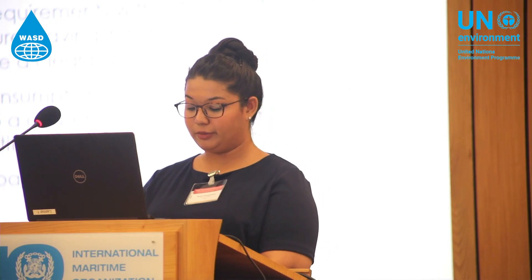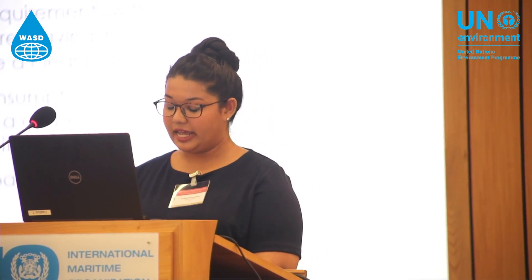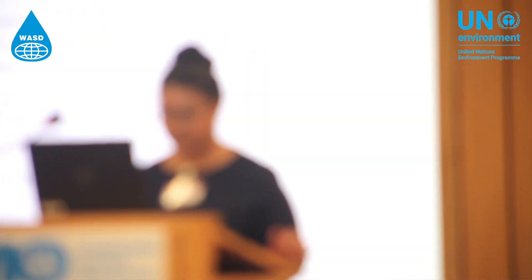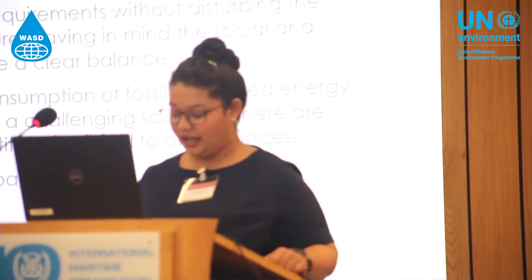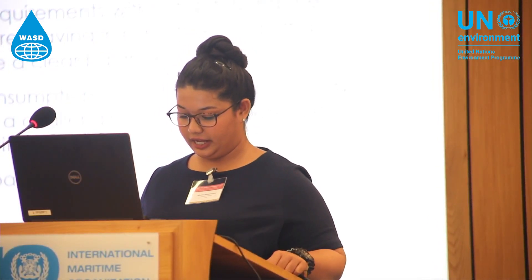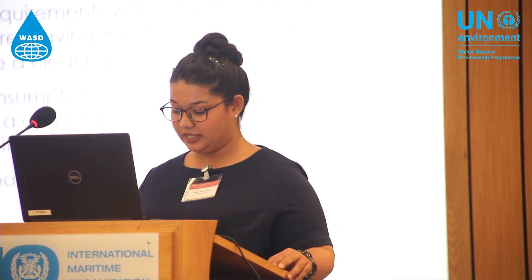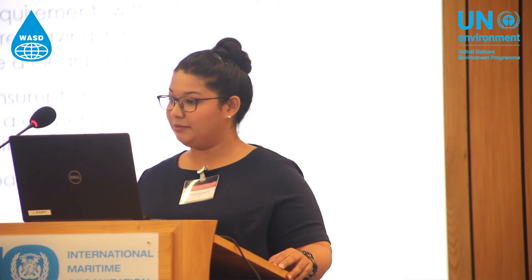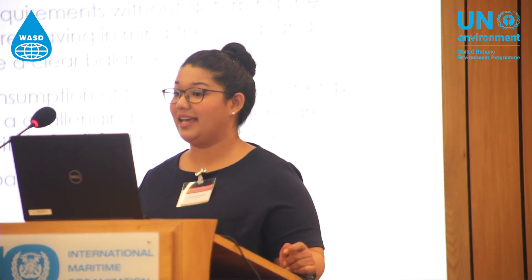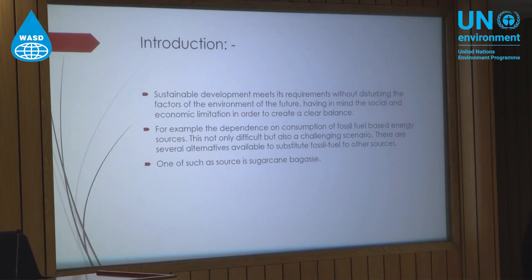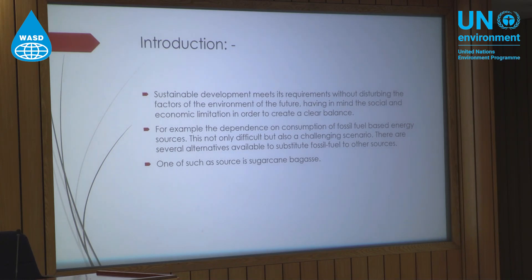The annual global production of sugarcane is 1.6 billion tons. In post-harvest processing, sugarcane leaves behind many residues, such as sugarcane bagasse — also called SB — and sugarcane leaves, also called SL. SB and SL can be used in different forms.